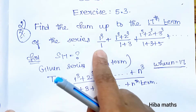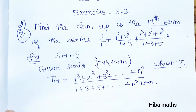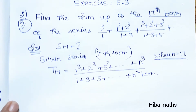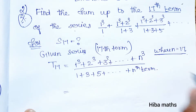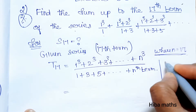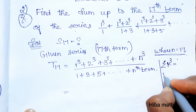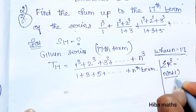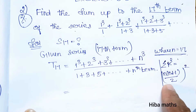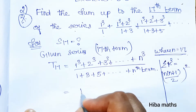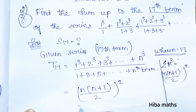The nth term of the series is T of n. The sum of k cubes formula is: summation of k³ equals n(n+1)/2 whole squared. The sum of natural number cubes is [n(n+1)/2]². So we apply this formula in the numerator.